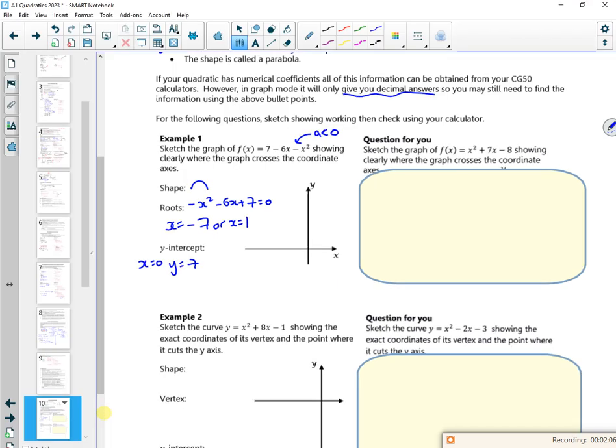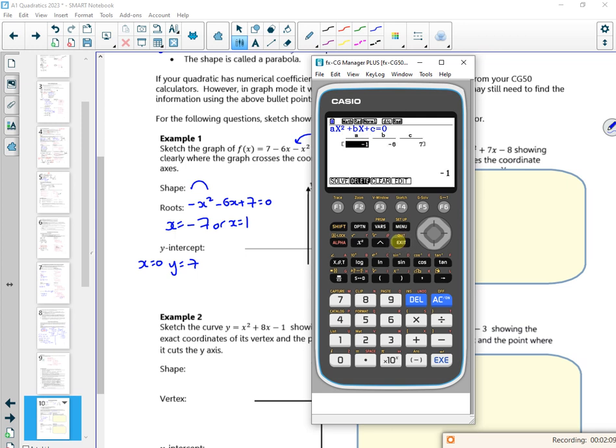Now on your calc, you can graph it. If I do exit a few times, or actually just press menu, if I do menu and graph, then clear out this equation. I'll put in -x² - 6x + 7. Press exit a few times, it might give me a dodgy looking set of axes.